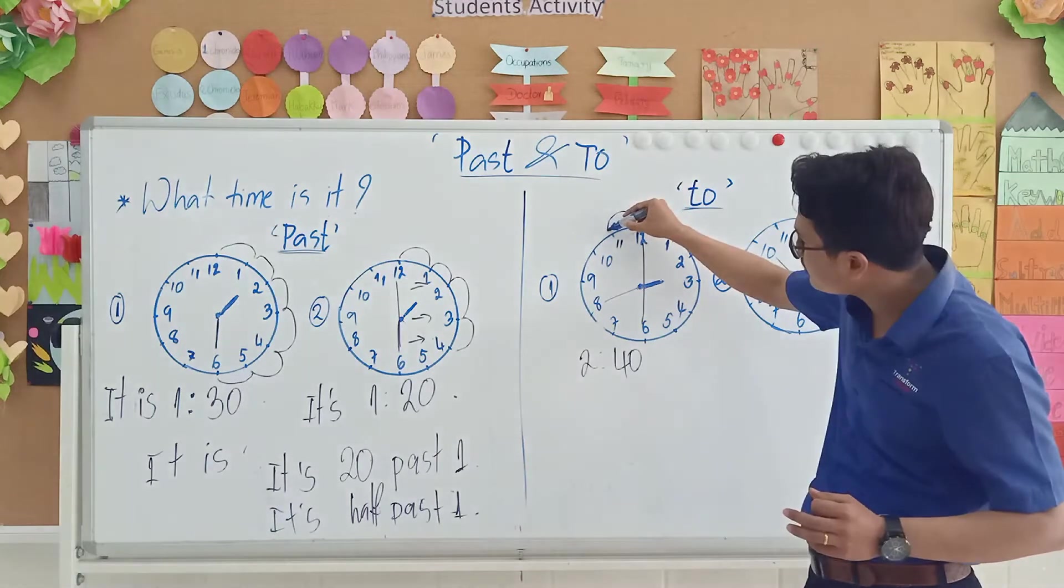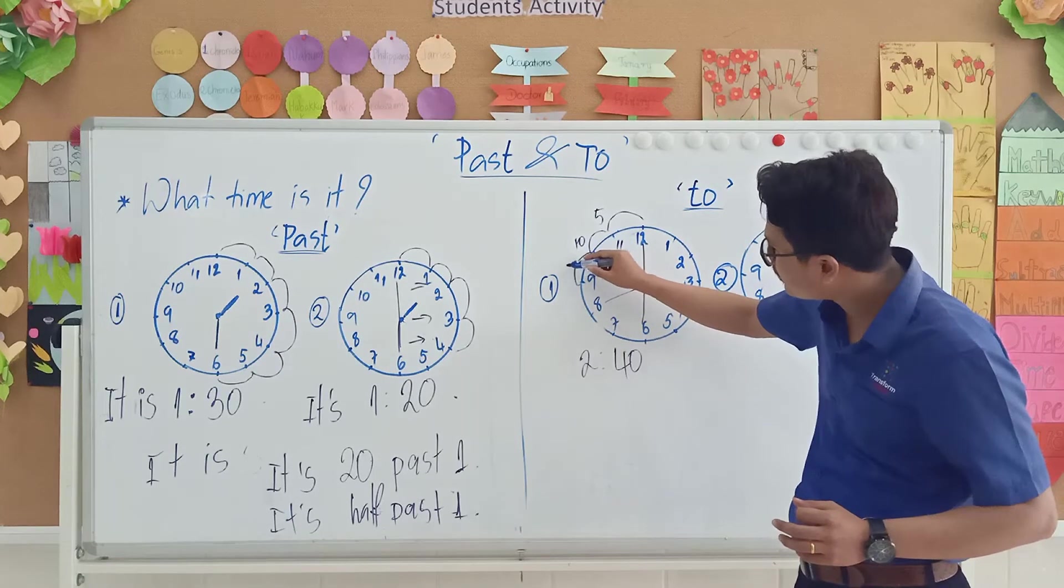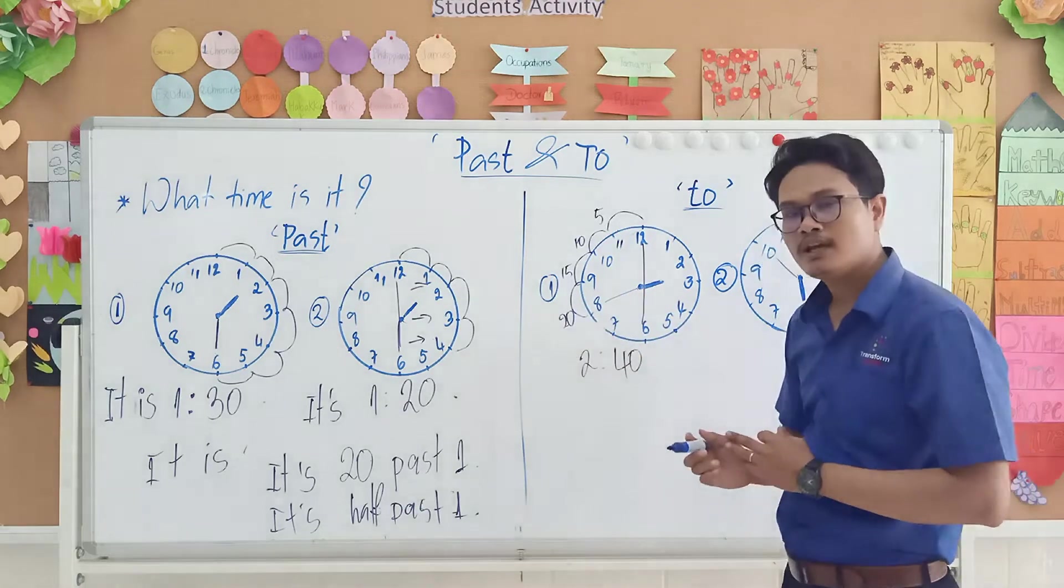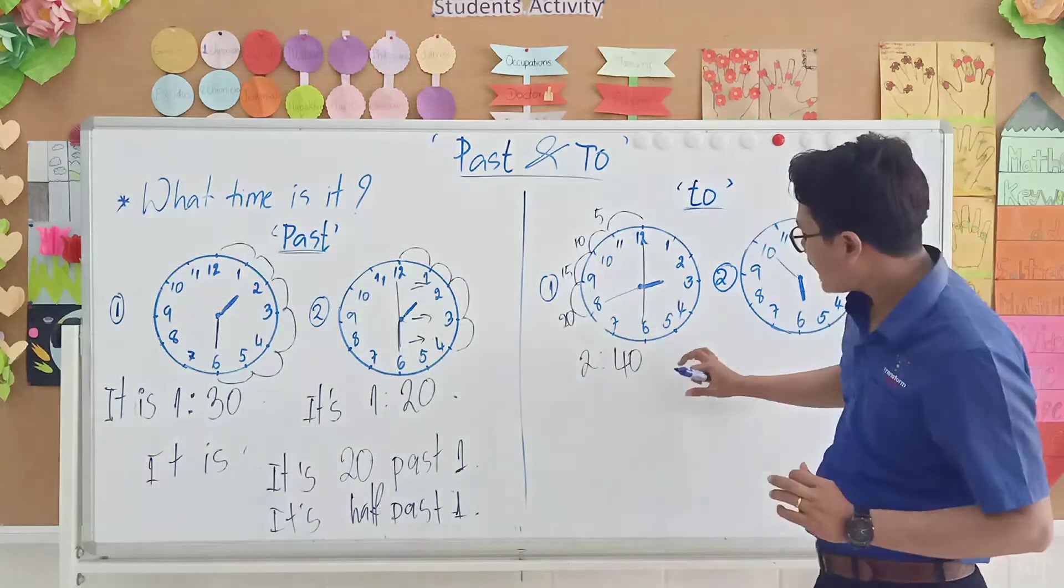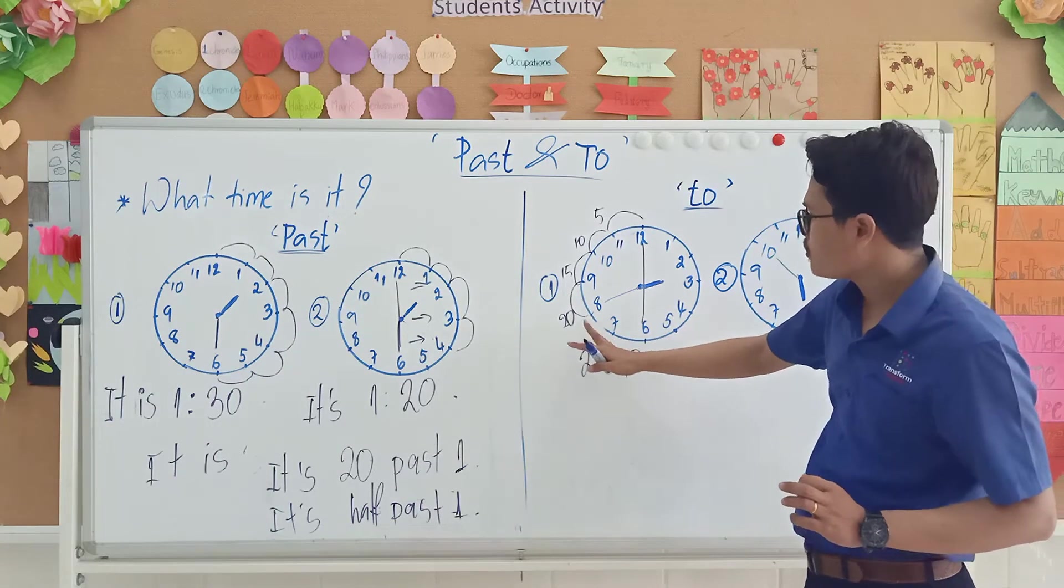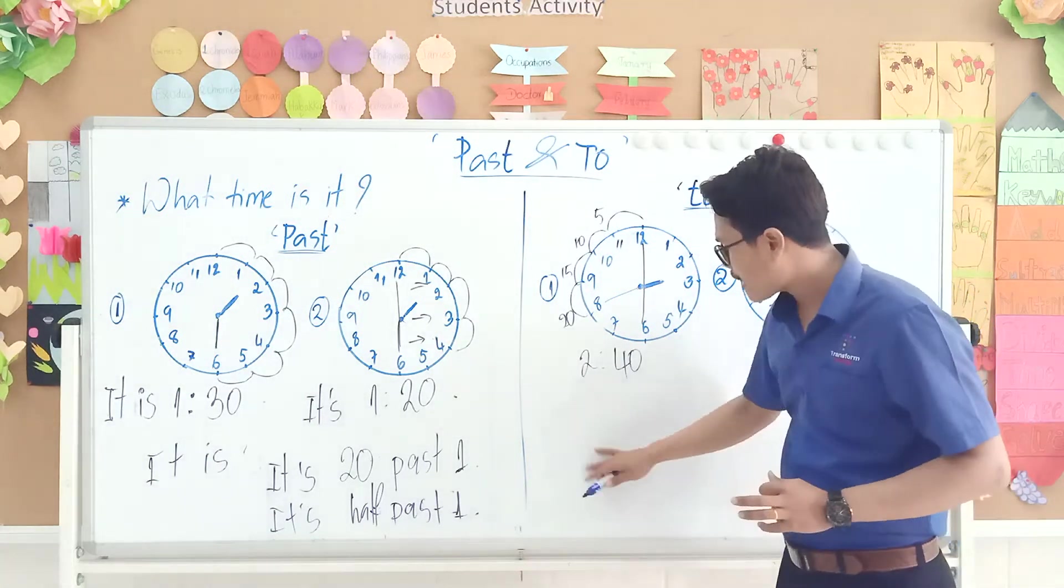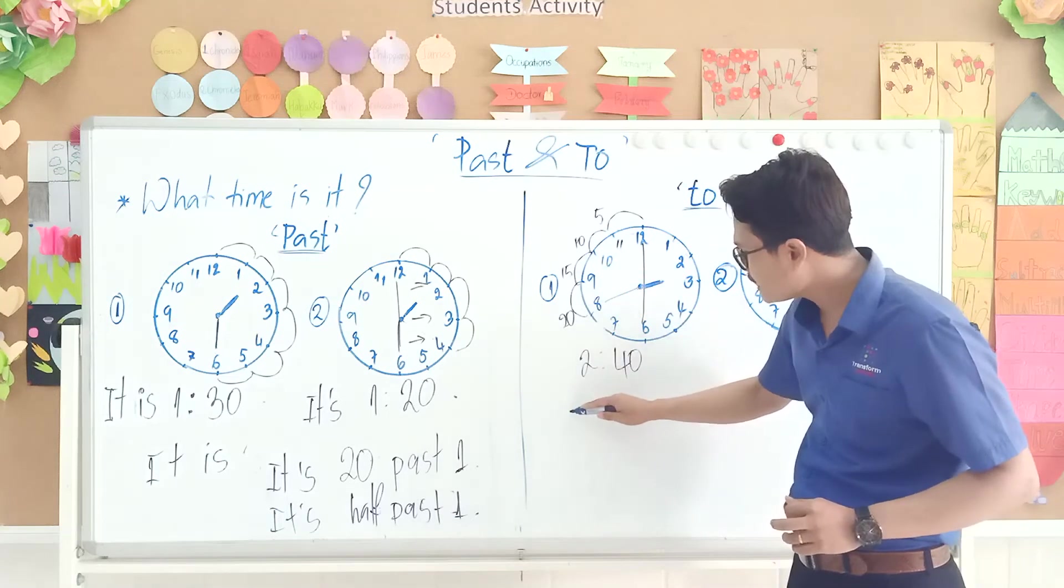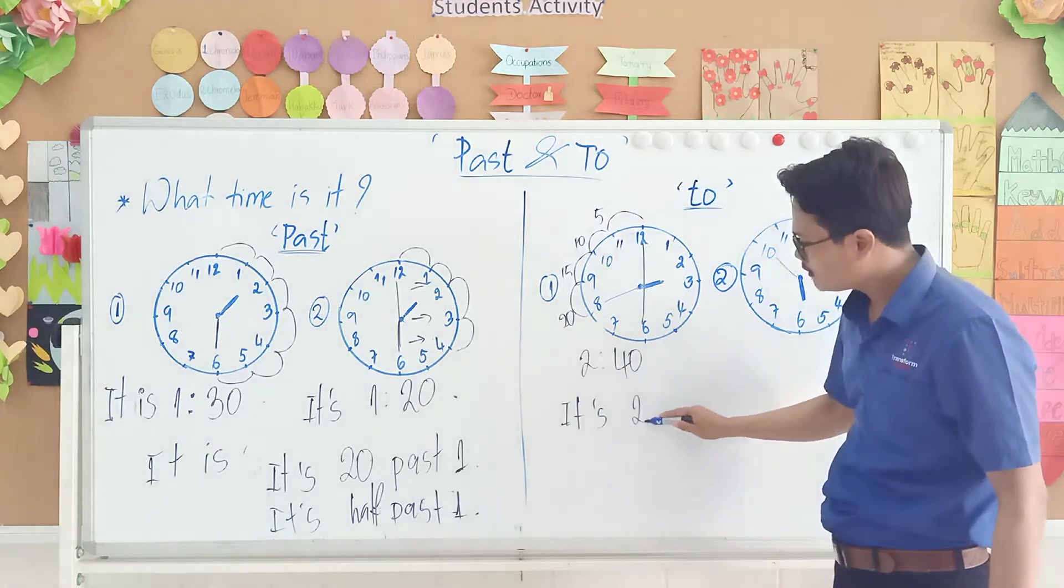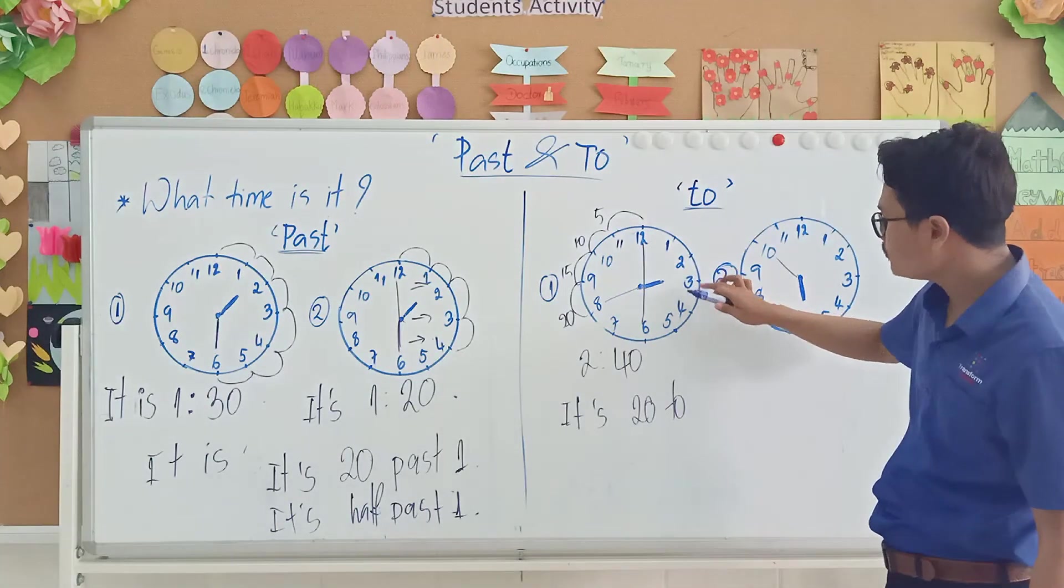So from here to here is 5 minutes, 10 from here, 15, and then move here, 20. So 20 minutes. If it's here, it is 2:40 minutes. So it would be 20 minutes to 3. So the way to write, you need to write it is 20 to 3.